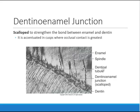The dentino-enamel junction (DEJ) is where the dentin and enamel meet. It is scalloped and curvy. The reason it's bumpy and scalloped is so that the enamel and dentin can bond nicely together.